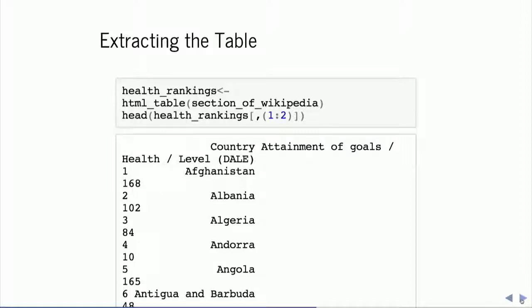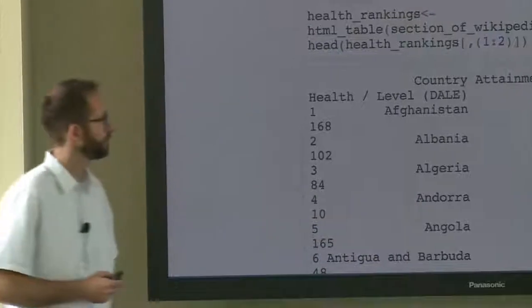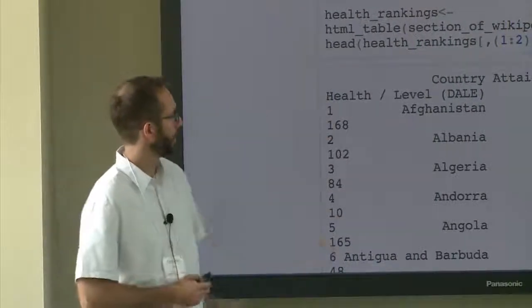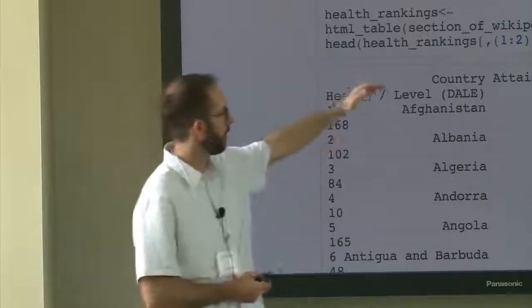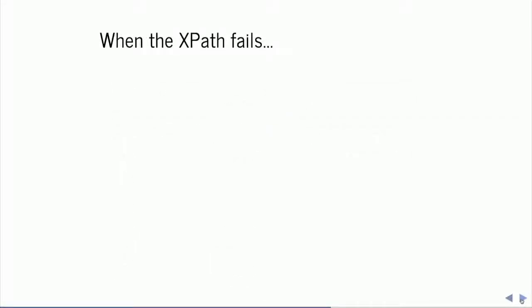We've gotten down to the right branch, but within the branch there's still a bunch of content. What we want is the table specifically, so if we apply the html_table function once we're on the right node, it pulls out all table-style objects from that node. Here I've defined that as a new object called 'health_rankings' using my assignment operator. When we browse that object, we see it's still not a perfectly neat data frame, but we've got a list of countries and are getting much closer to the data we intended to scrape. We could then transform it into a data frame or export it as a CSV.